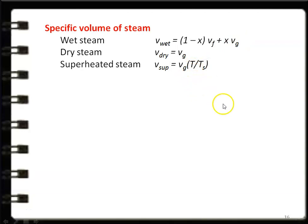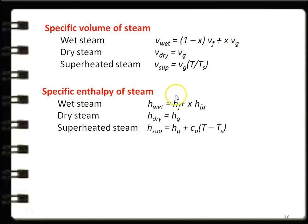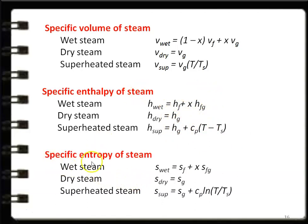Specific enthalpy: for wet steam, H_wet = Hf + x·Hfg; for dry steam, H_dry = Hg; for superheated steam, H_super = Hg + Cp·(T − Ts). Hf, Hfg, and Hg values are taken from the steam table. Specific entropy: for wet steam, S_wet = Sf + x·Sfg; for dry steam, S_dry = Sg; for superheated steam, S_super = Sg + Cp·ln(T / Ts). Sf, Sfg, and Sg values are taken from the steam table.